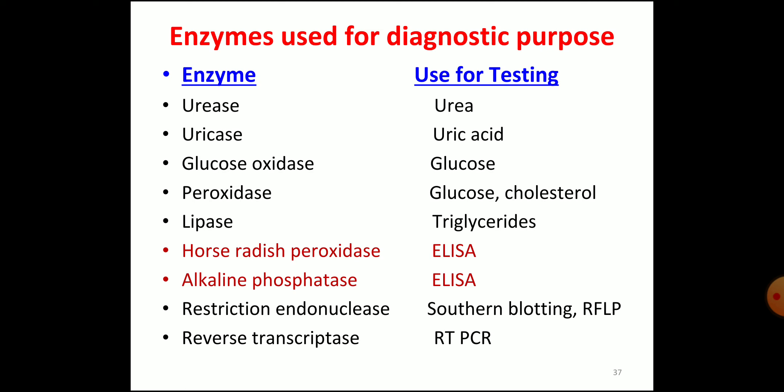We have finished isoenzymes and clinical enzymology, mainly dealing with two isoenzymes — LDH (lactate dehydrogenase) and creatine kinase. The cardiac biomarkers mainly used are CKMB, AST, and lactate dehydrogenase. We also discussed biomarkers like pancreatic enzymes, glucose-6-phosphate dehydrogenase, and therapeutic enzymes used for treatment of disorders like myocardial infarction (streptokinase) and lymphoblastic leukemia (asparaginase). Thank you.